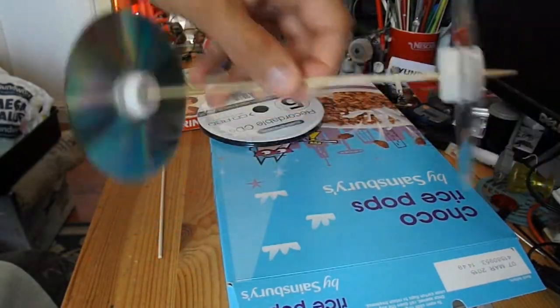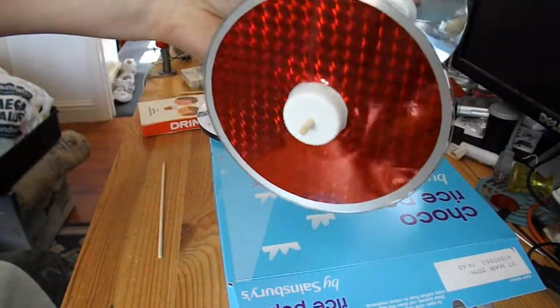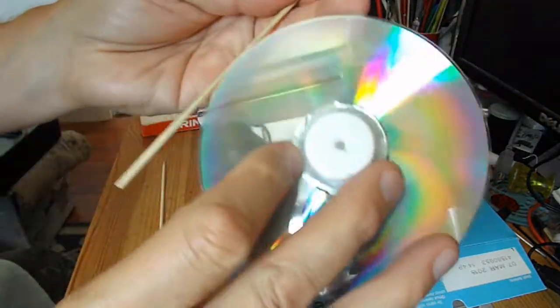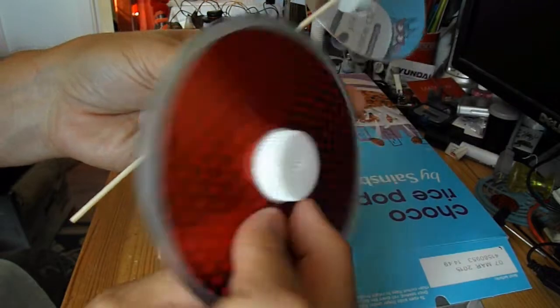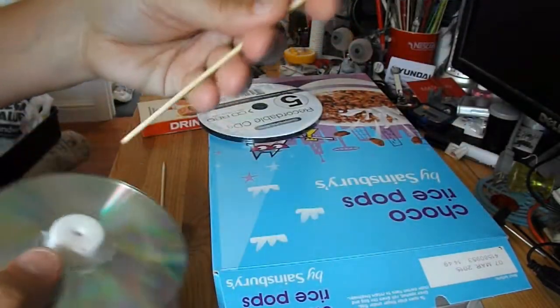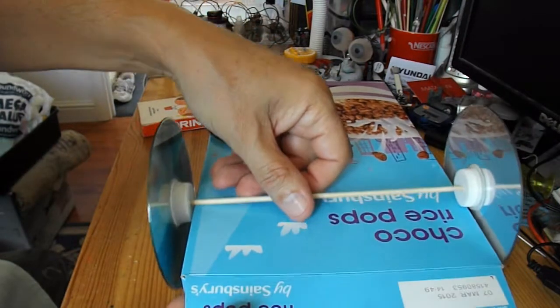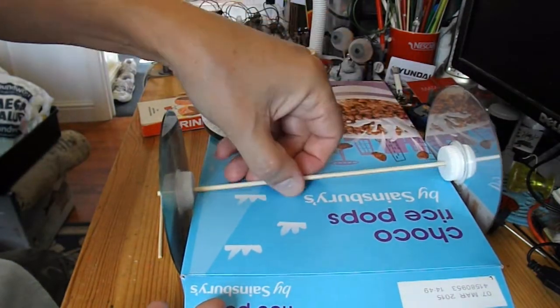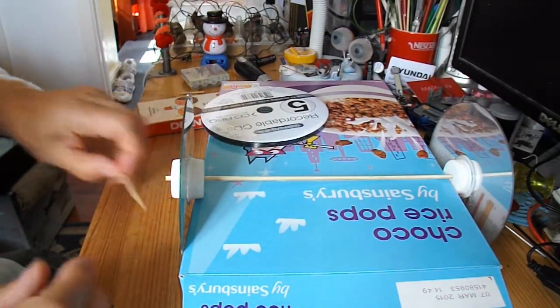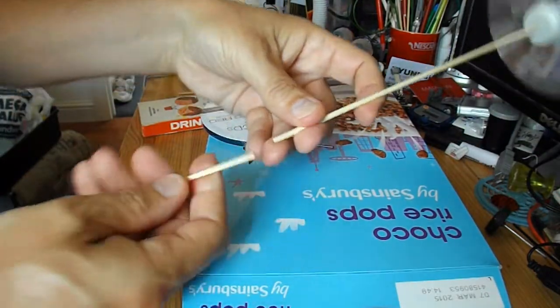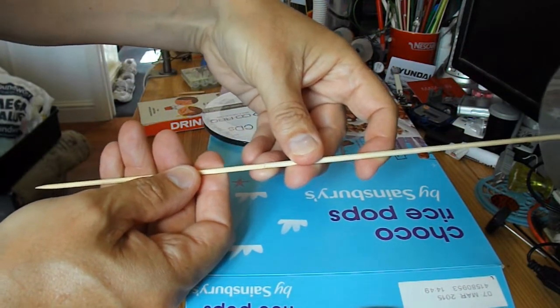For wheels I'm going to use these wheels from one of my other projects. They're just ordinary CDs with bottle tops hot glued to the middle for the hubs. The only problem I've got is my barbecue skewers are not quite long enough to go right across the box. So the easiest thing I can do is extend the skewer, make it longer.